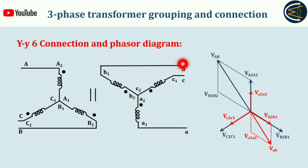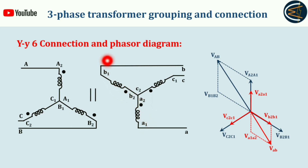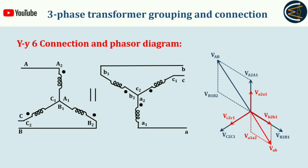From the diagram, V_ab spans between two points where V_a1a2 and V_b2b1 contribute — the vectorial sum of the voltage developed across a1a2 and b2b1 gives V_ab. So the vectorial sum of V_a1a2 and V_b2b1 is the secondary side line voltage. As is clear from this phasor diagram, V_AB and V_ab are exactly 180 degrees apart — meaning the secondary side line voltage and primary side line voltage are 180 degrees apart. This proves it is YY6 connection.